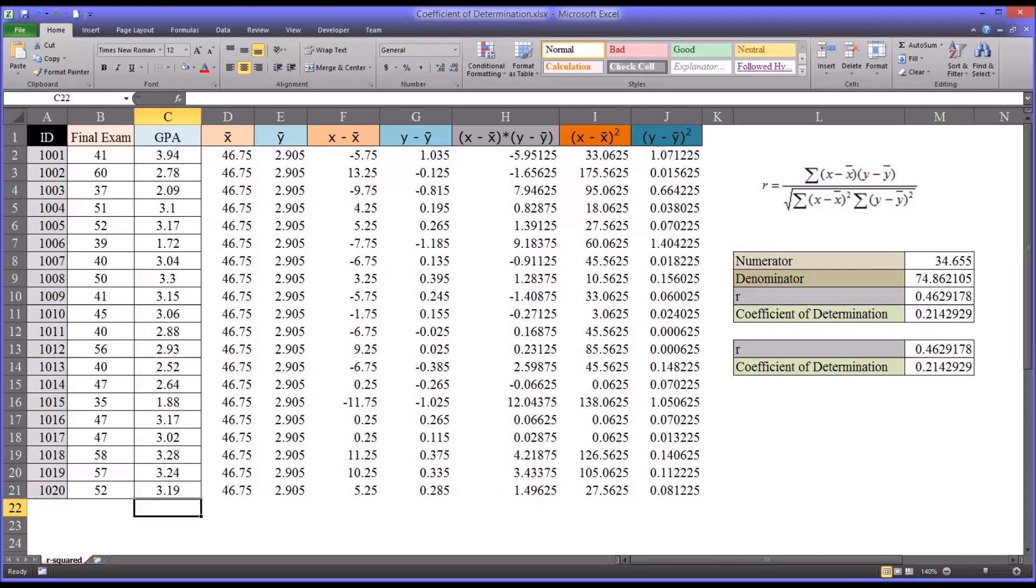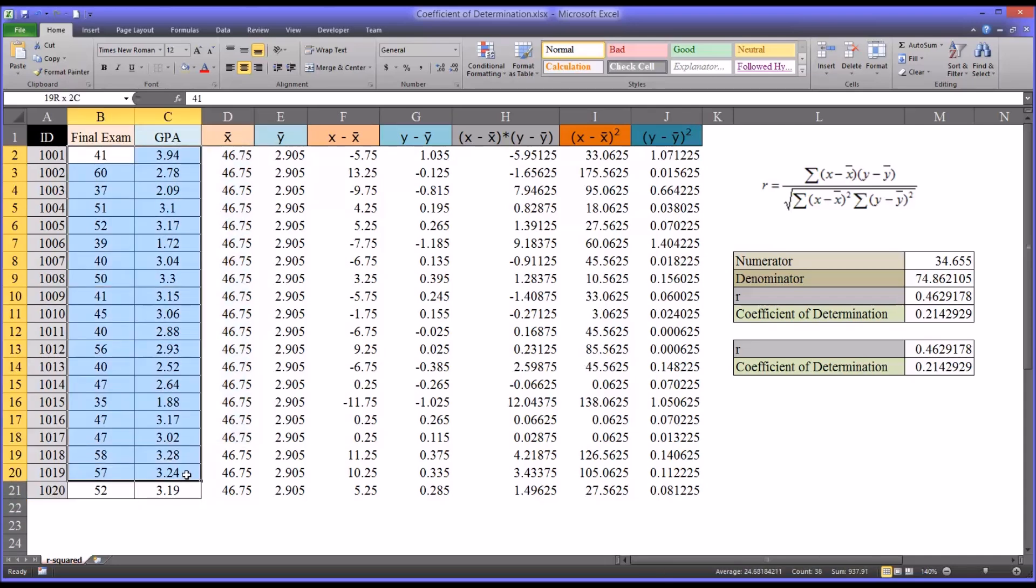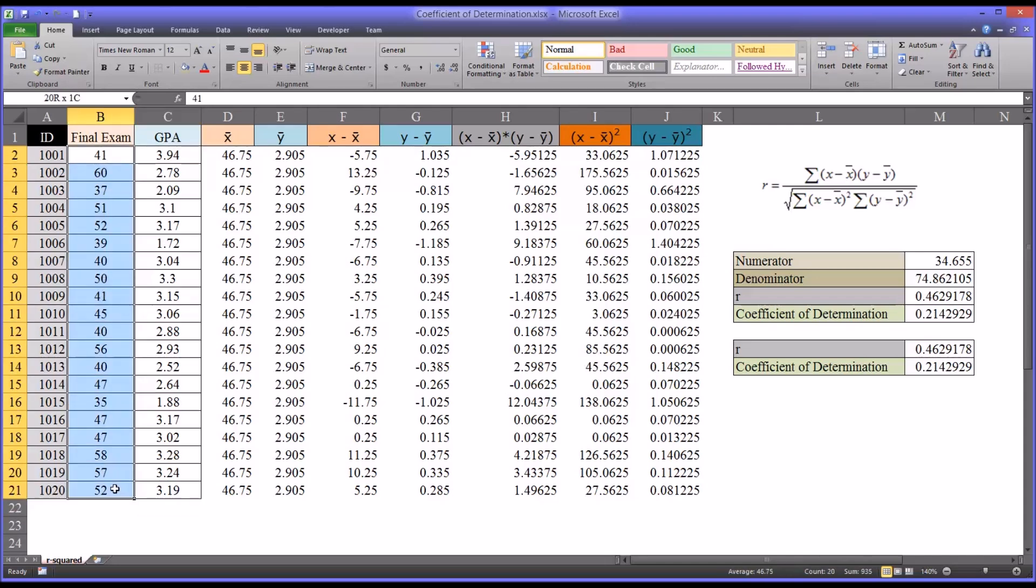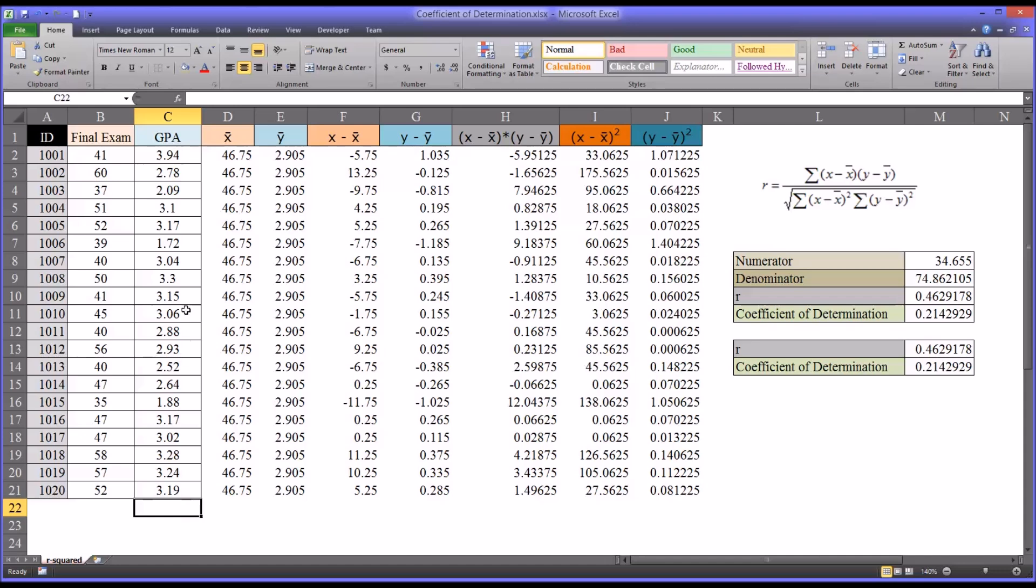It's important to understand that both correlation and the coefficient of determination tell us something about the relationship between these two variables, but not in terms of causality. It doesn't say that a final exam score causes movement in the GPA, or that the opposite is true. It just tells us something about the relationship, specifically the amount of variance in one variable that can be attributed to the other. I hope you found this video on calculating the coefficient of determination in Excel to be helpful. As always, if you have any questions or concerns, feel free to contact me and I'll be happy to assist you.